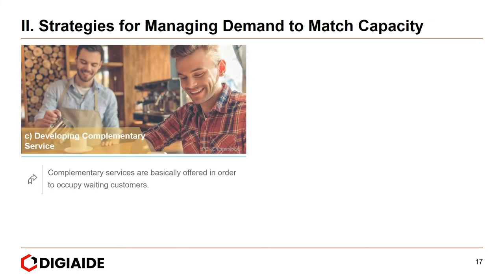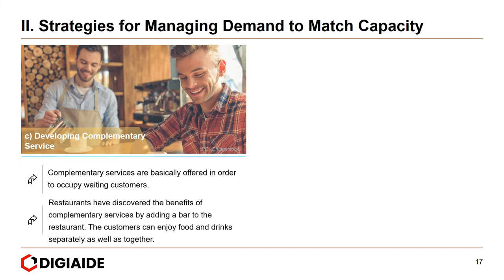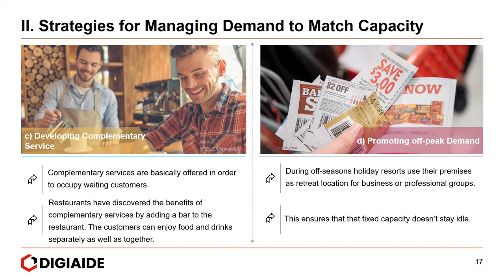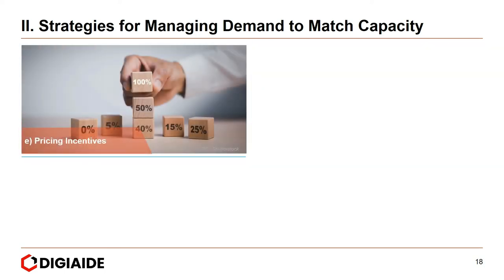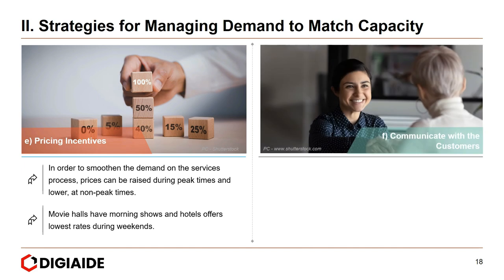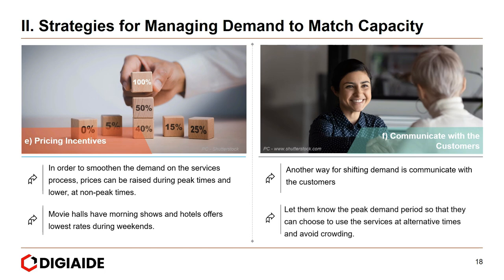Third, developing complementary services: complementary services are offered to occupy waiting customers. Restaurants have discovered this benefit by adding a bar, so customers can enjoy food and drinks separately or together. Fourth, promoting off-peak demand: during off-seasons, holiday resorts use their premises as retreat locations for business or professional groups, ensuring fixed capacity doesn't stay idle. Fifth, pricing incentives: prices can be raised during peak times and lowered at non-peak times to smooth demand — movie halls, morning shows, and hotels offer lower rates during off-peak periods. Finally, communicate with the customer: let them know peak demand periods so they can choose to use the service at alternative times and avoid crowding.